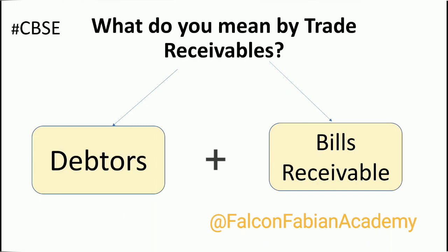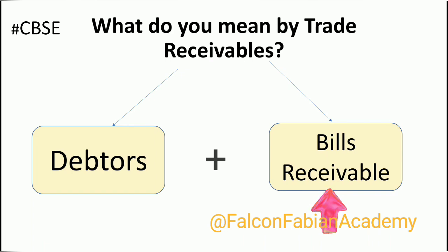Now let's understand the term bills receivable. Bills receivable is a bill of exchange accepted by a debtor — a person to whom we did credit sales — for a specified sum to be paid on a specified date. A bill of exchange is a written order that binds a party to pay a fixed sum of money to another party at a specific date.